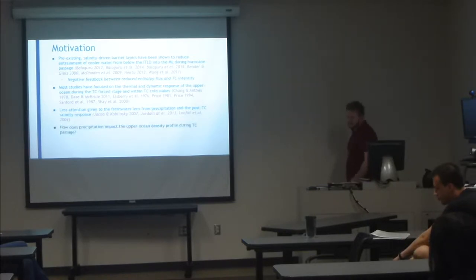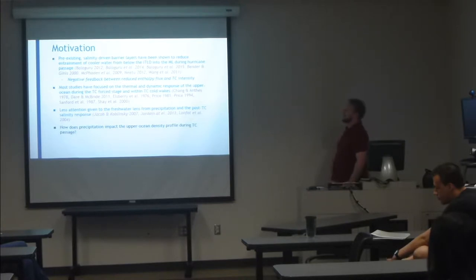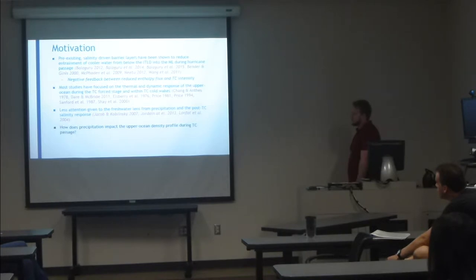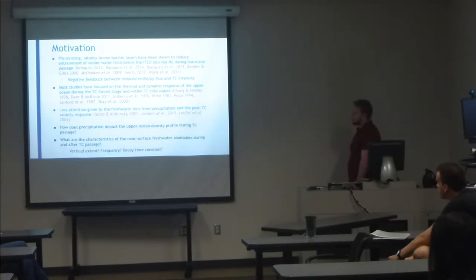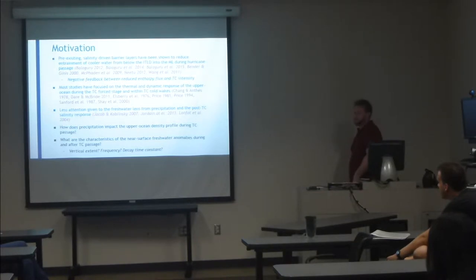The questions I'm attempting to answer, or at least clarify, are: how does this precipitation impact the upper ocean salinity structure during TC passage? And also, what are the characteristics of these freshwater anomalies — their depth extent, how frequently they occur, and what's the decay time span?